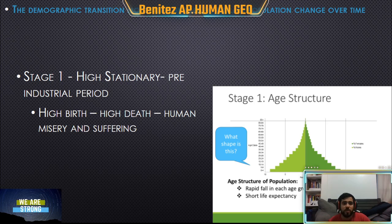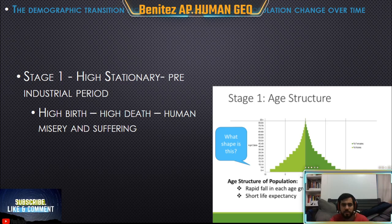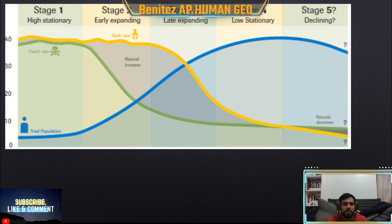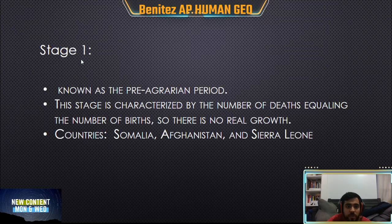In stage one, a lot of babies are being born, but since there isn't good healthcare and not a lot of doctors, many of those babies are dying. This is before machines were created. Countries in stage one do not have those resources, so the total population growth stays pretty low. Stage one is known as the pre-industrial period. Make sure you guys pause this video to read the bullet points for more information.